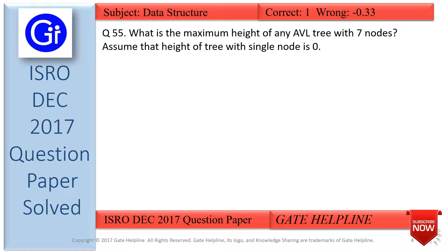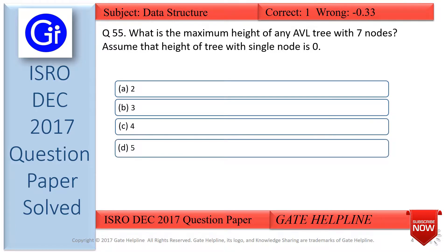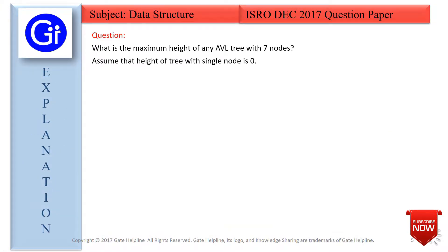Question number 55 is: what is the maximum height of an AVL tree with 7 nodes? Assume that the height of a tree with a single node is 0. The options are A) 2, B) 3, C) 4, and D) 5. Now we will see the explanation to this question.